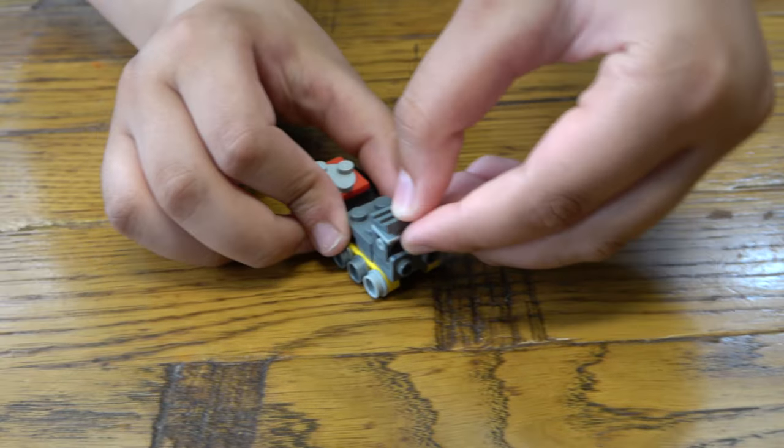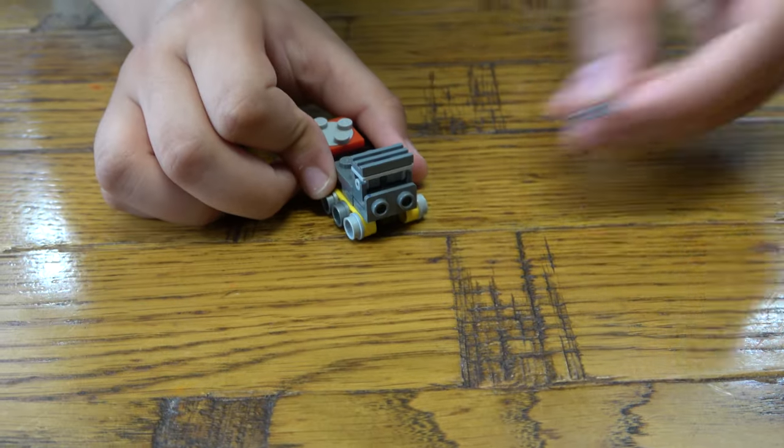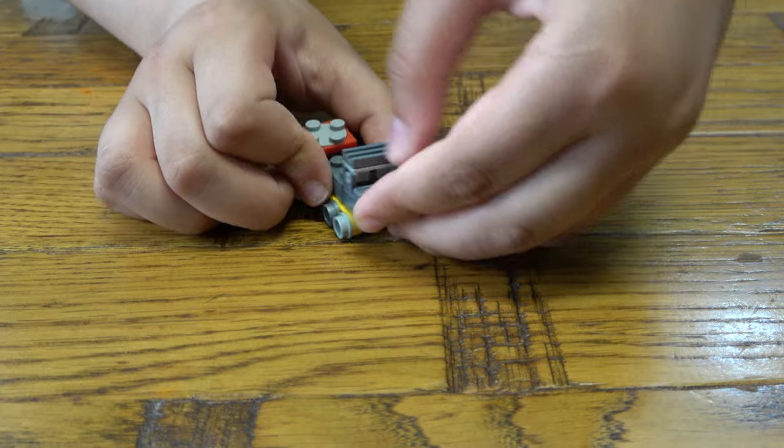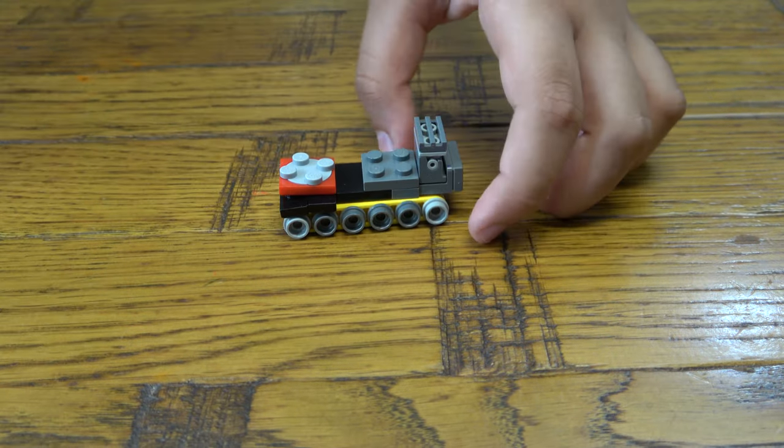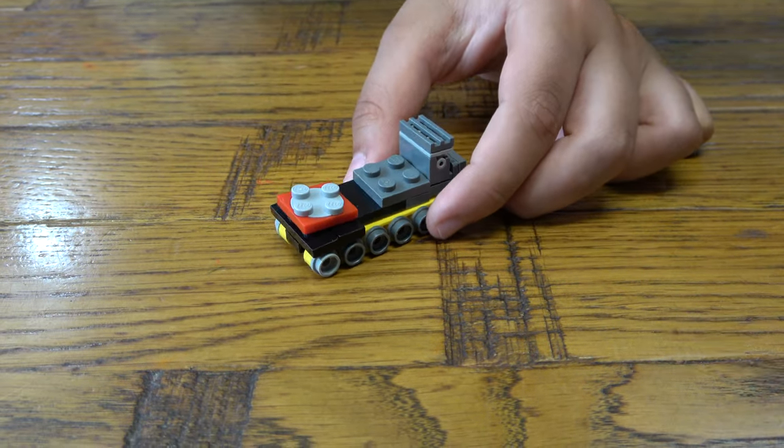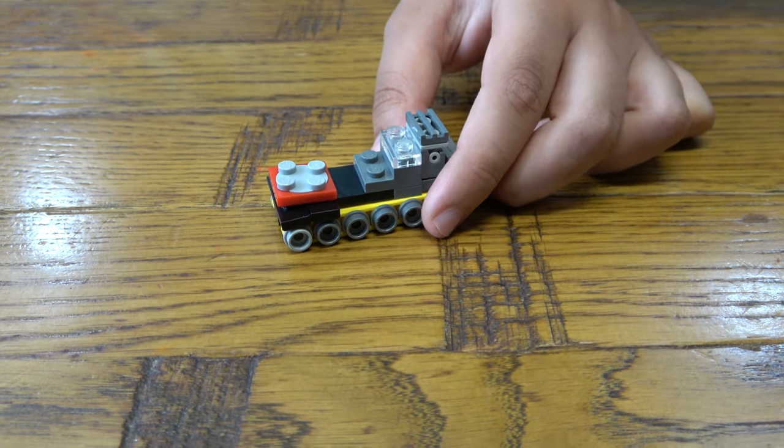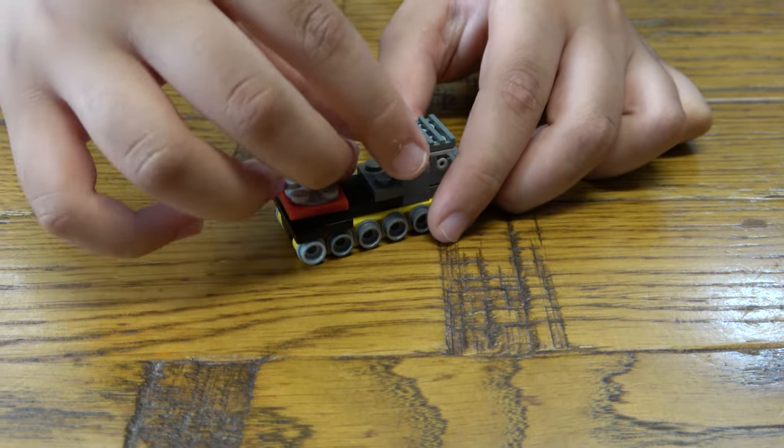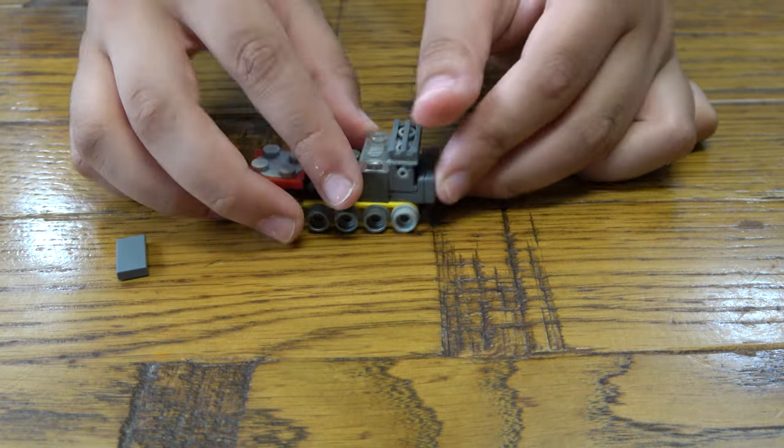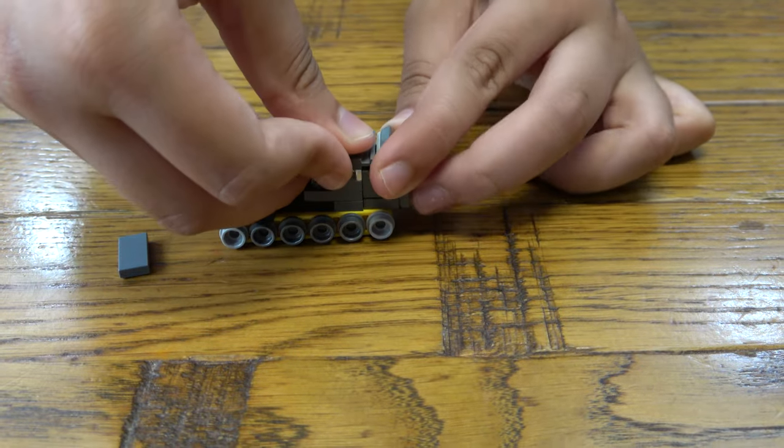Next we're going to get one of these gray pieces, put it on top, get a flat piece, put it there. Then next we're going to build that, put that there, and then do that, and then place that there.